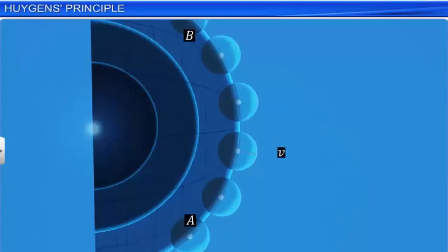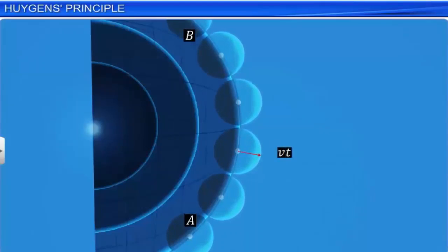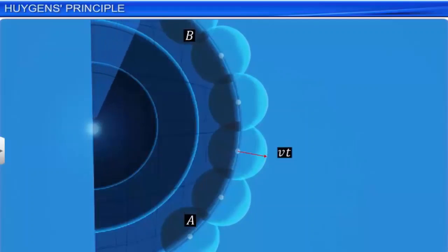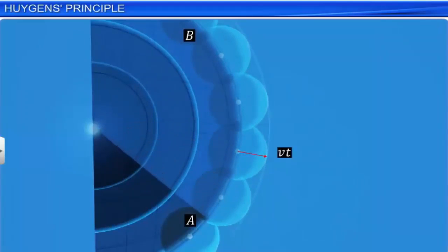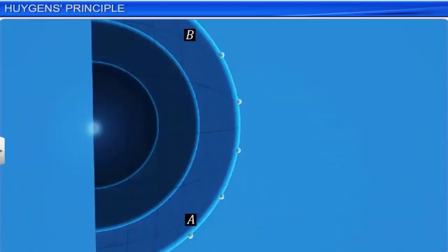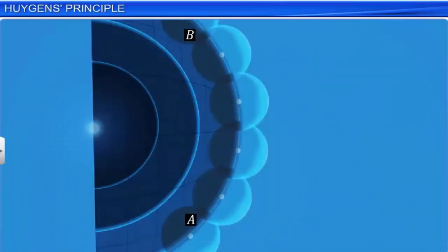If the speed of the wave is V, then in time t, the radius of the spherical wavelets becomes Vt. The tangential surface common to all these spheres in the forward direction gives the shape and location of the new wave front after t seconds. In the image, the surface A'B' represents the location of the wave front AB after t seconds. The secondary wavelets must be directed backward as well as forward from the secondary point sources. If this were correct, we would get a surface such as A''B'' as a back wave.